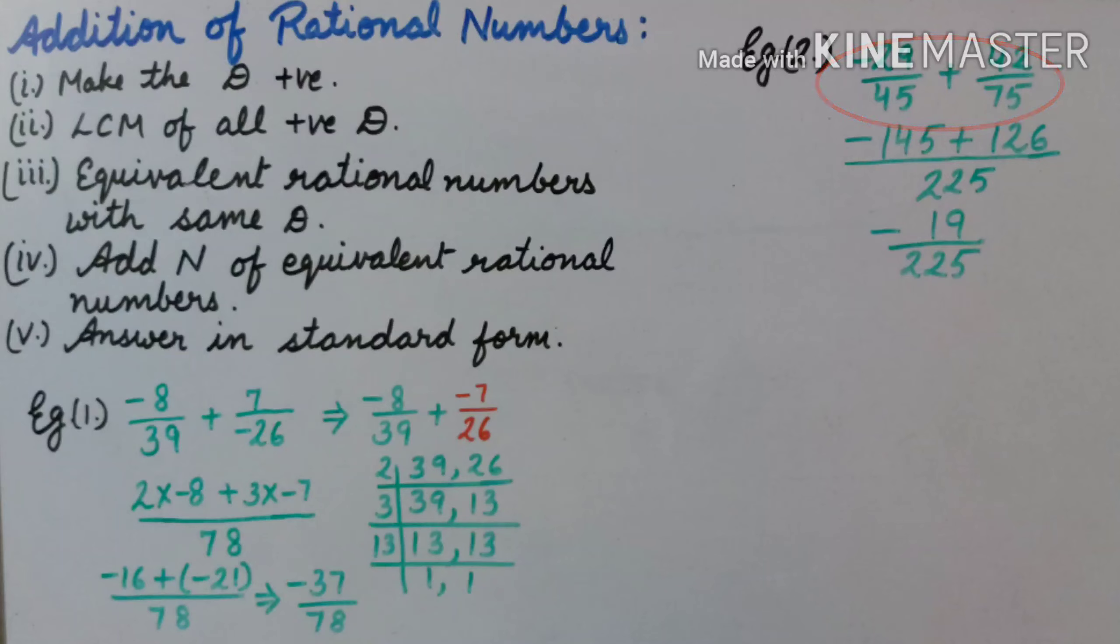In the second example, we should add minus 29 upon 45 and 42 upon 75. When we operated these two, we have got minus 145 plus 126 upon 225.